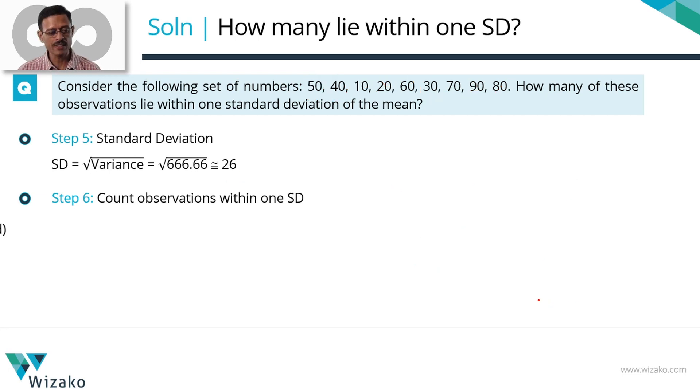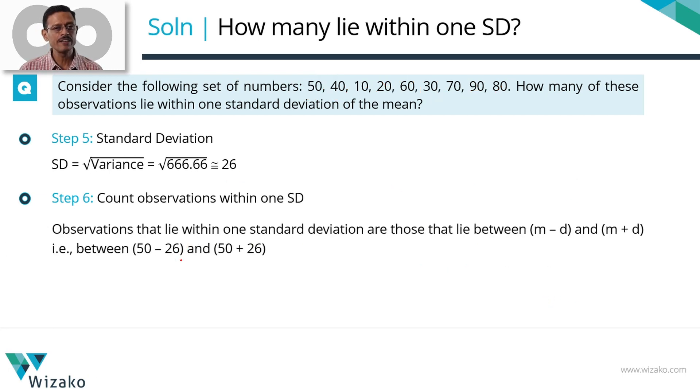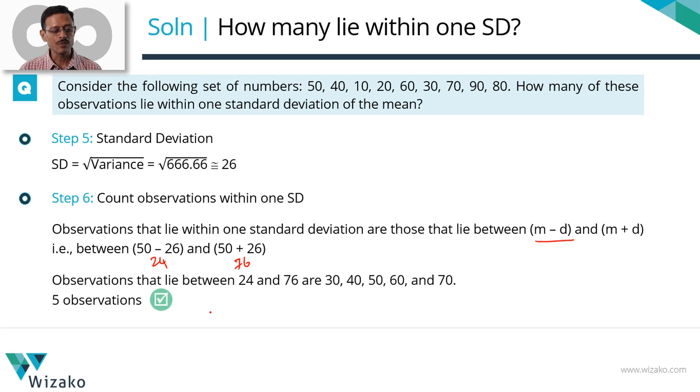Quickly summarize this last bit in a printed form. We know the deviation is 26. The mean is 50. So mean minus deviation is 24. Mean plus deviation is 76. Observations that lie between 24 and 76 are these five numbers. So the answer is five observations.